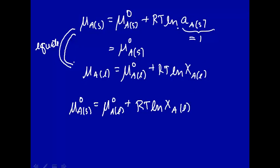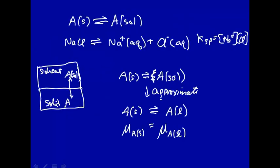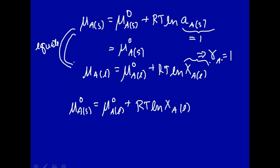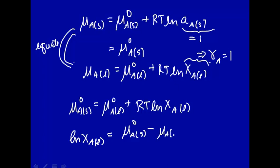You might notice I went from activity to mole fraction. This implies the activity coefficient of A equals 1 — so we're making this approximation already, and we might as well make this one too, which may or may not be as bad. Let's isolate the natural log of xA in the liquid state: that equals the standard state chemical potential of A solid, minus the standard state chemical potential of A liquid, divided by RT.